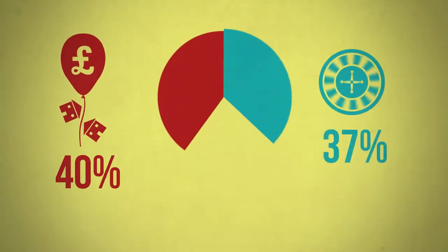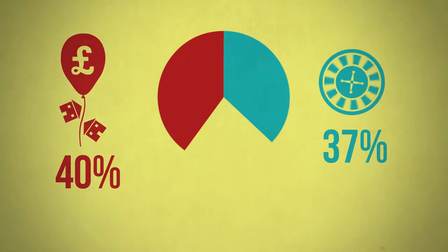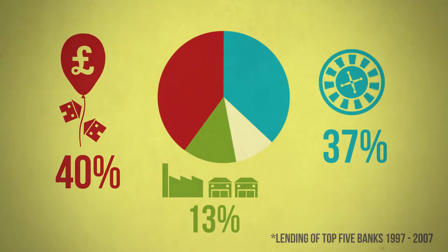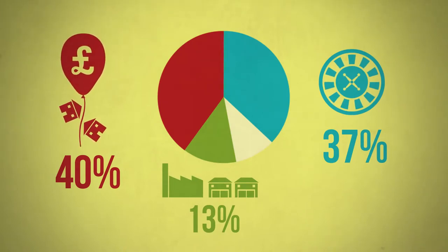They put most of the money that they create into house price bubbles and financial speculation, and only a small amount into businesses outside the financial sector. We simply don't think that we can trust banks, who are hard-wired to chase short-term profits, with something as powerful as the ability to create money.